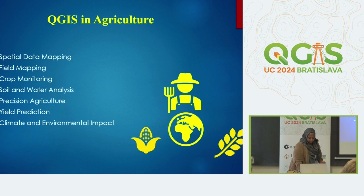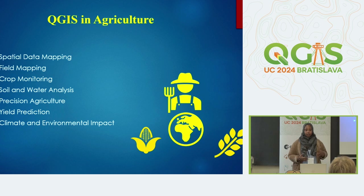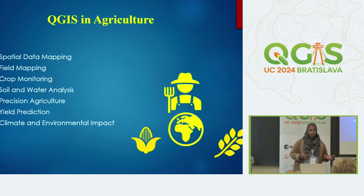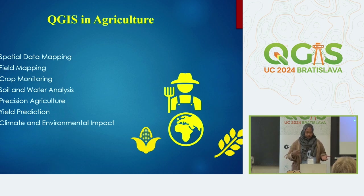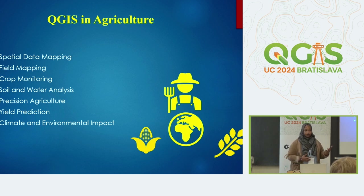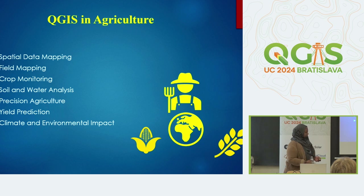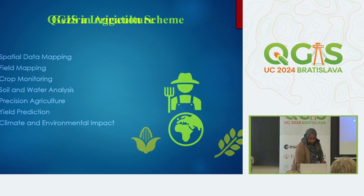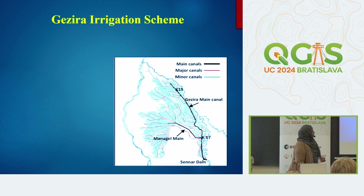QGIS also aids in yield prediction by integrating models to analyze historical data in yield production and use it as input to models. You can also integrate flood forecasts and drought forecasts and their impact on agricultural performance in the future.